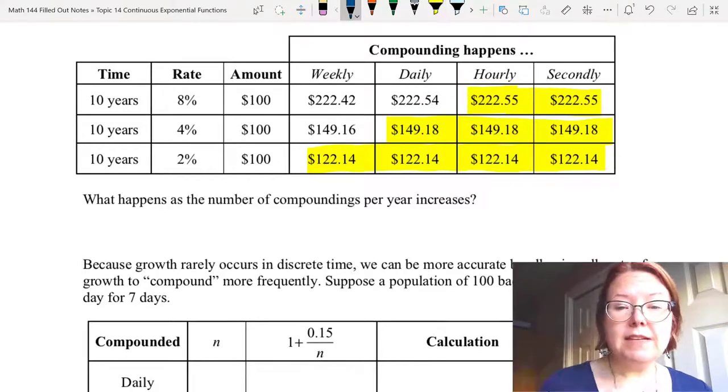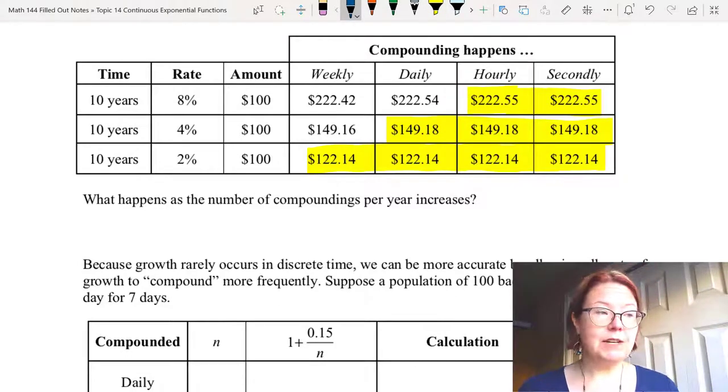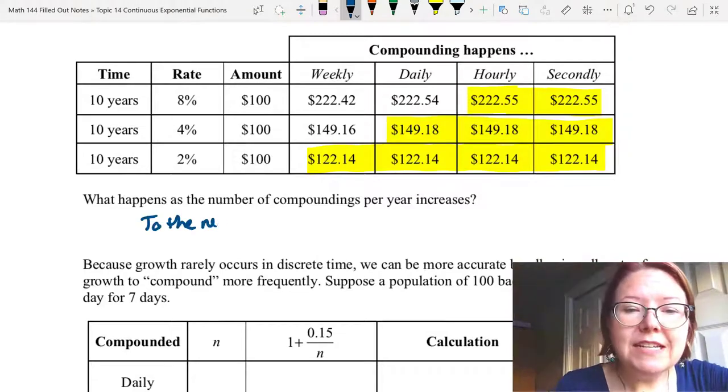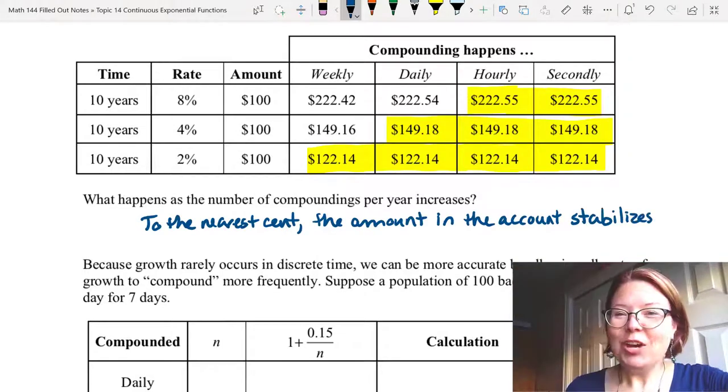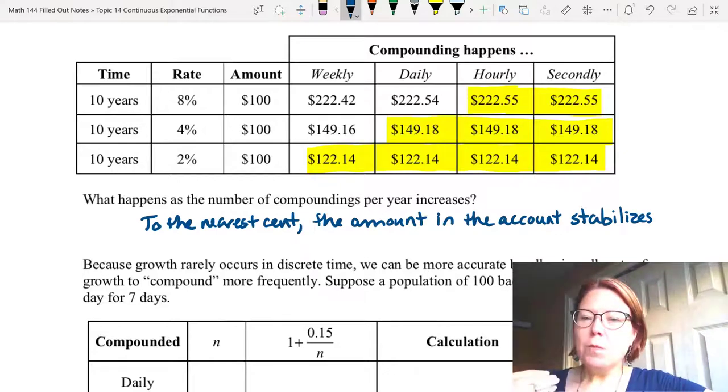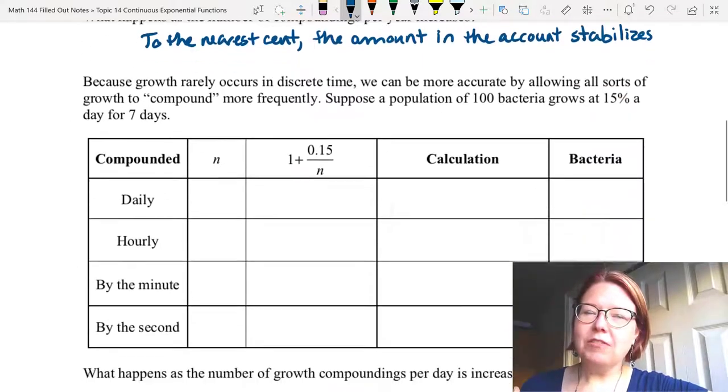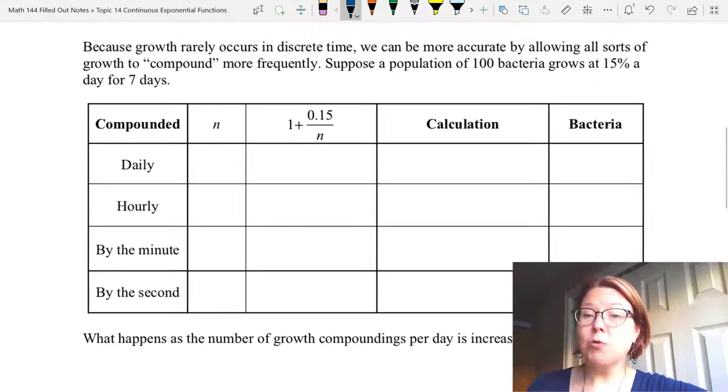So what's happening as the number of compoundings per year increases? Well, to the nearest cents, the amount in the account stabilizes. Alright, so we've done this with money, but we don't have to just do this multiple compoundings with money. We can calculate growth of other things more frequently than annually as well.